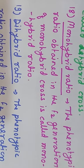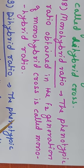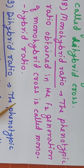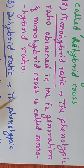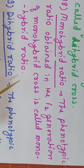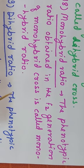After monohybrid and dihybrid crosses come monohybrid ratio and dihybrid ratio. Monohybrid ratio means the phenotypic ratio obtained in the F2 generation of a monohybrid cross. It is calculated on the basis of external appearance. The monohybrid phenotypic ratio is always 3:1 — three dominant to one recessive. The phenotypic ratio obtained in the F2 generation of a monohybrid cross is called the monohybrid ratio.